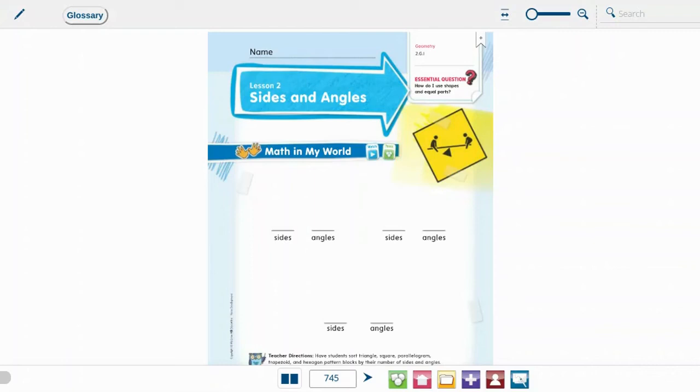Hey there, second grade. Today we are going to be doing chapter 12, lesson 2. Now I hope that you have continued working on your vocabulary cards because we're going to continue working on those words in this lesson, especially as we talk about sides and angles.